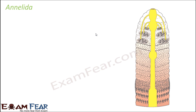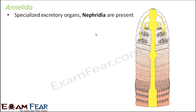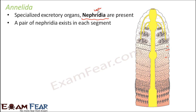Next are the annelids, the best example being the earthworm — the segmented worms whose entire body is distinguished in the form of segments. These annelids have specialized excretory organs called nephridia. This is something interesting as well as important. Earthworms have specialized organs for excretion called nephridia.